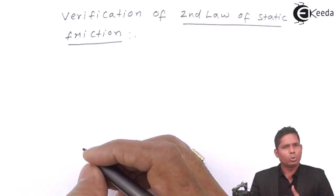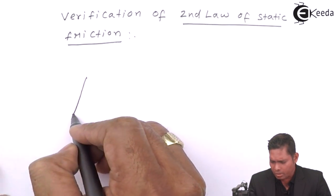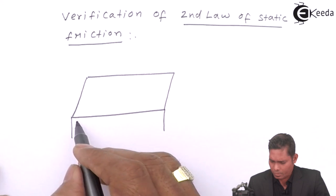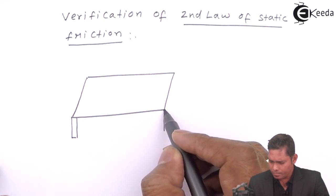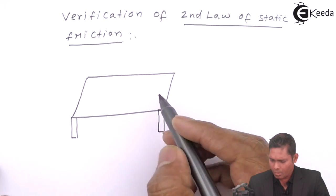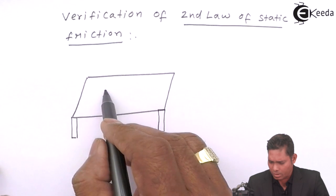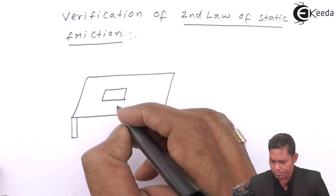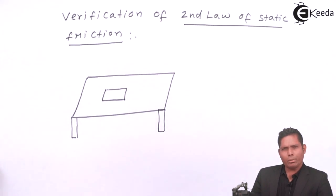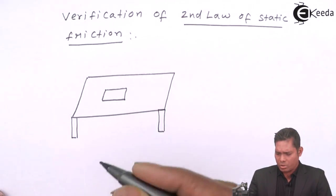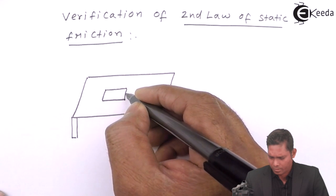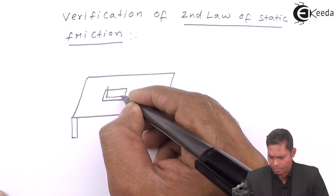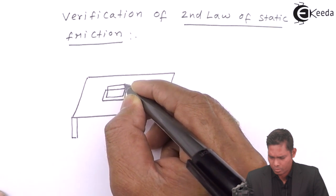What we will do? We will do the same thing. First, we will take, suppose this is a table. This is a table. The block is here. I will take two blocks. One is here and another just over it. Two blocks, one over another.